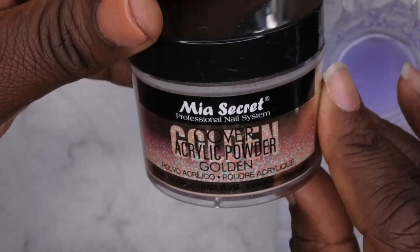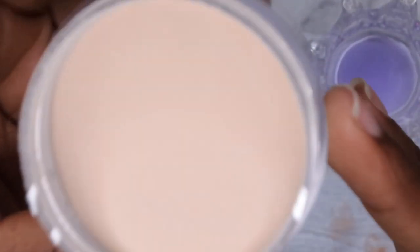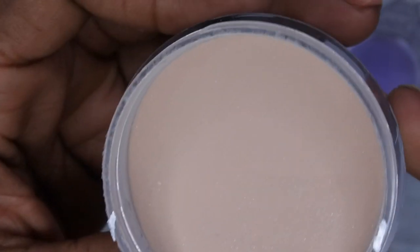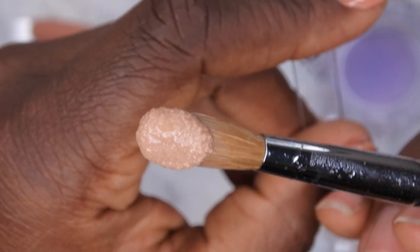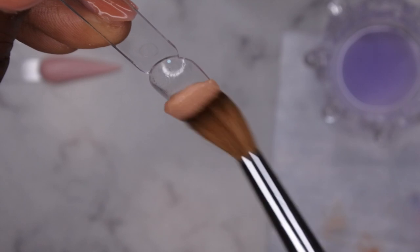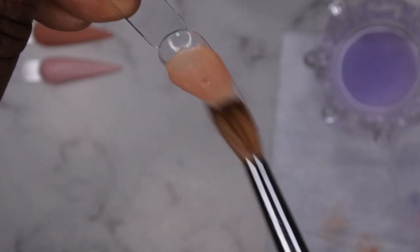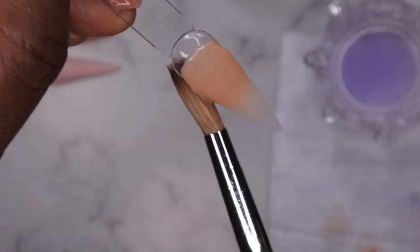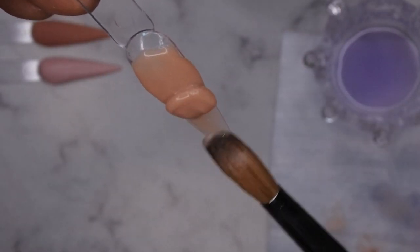Next, I'm going to go in with Cover Golden by Mia Secret. I was really excited to try this out. This is a really beautiful nude color that has just some slight shimmer to it. As I'm working with this brush, I do think that I'm going to like it if it's pinched. Y'all, this nude is beautiful. Holy smokes.